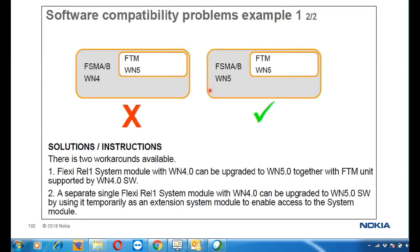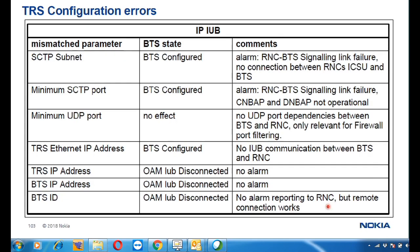There are two workarounds available: a Flexi Release 1 system module together with FTM units supported by WIN 4.0 software can be upgraded together with an FTM unit, or a separate single Flexi Release 1 system module can be upgraded to WIN just by using it temporarily as an extension system module to enable access to the system.